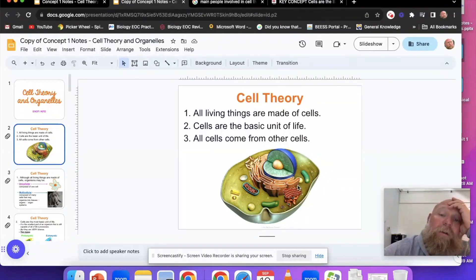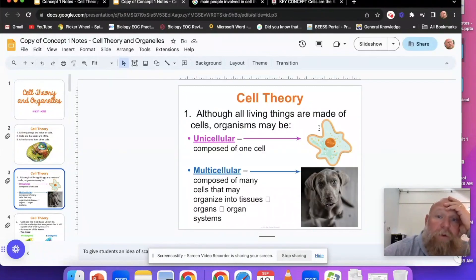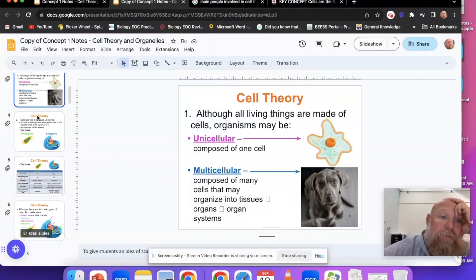Although all living things are made of cells, which is the first part of cell theory, you have multiple types. You have unicellular cells, composed of one cell. Then you have these multicellular organisms like dogs, you and I. Multicellular is composed of many cells.